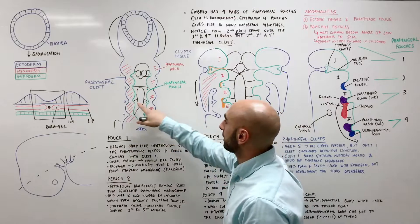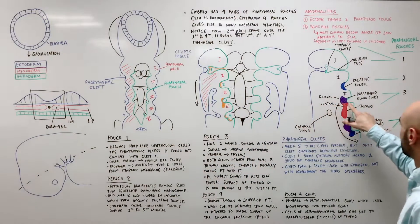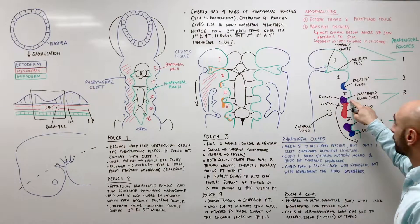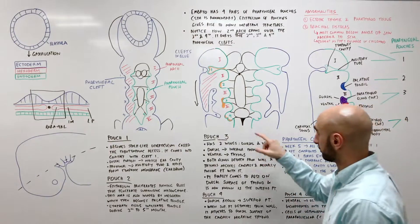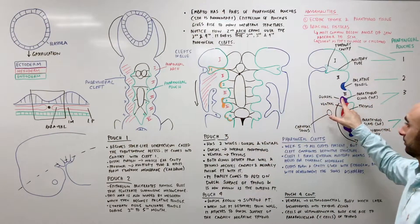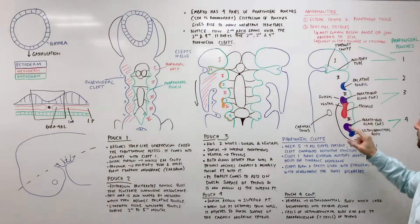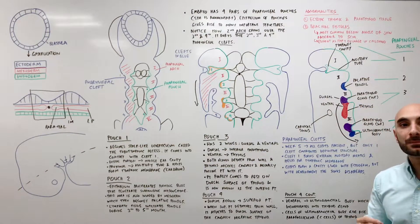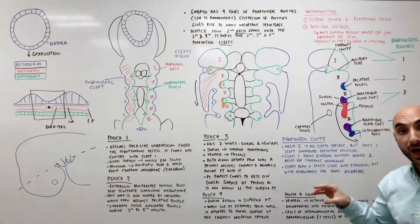Now pouch 3, step 1, step 2, step 3. You'll notice that the 3rd pouch has 2 parts or wings, a dorsal and a ventral wing. The dorsal wing becomes the inferior parathyroid gland, the ventral wing becomes the thymus.